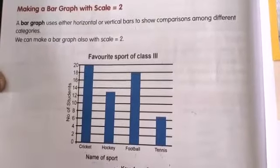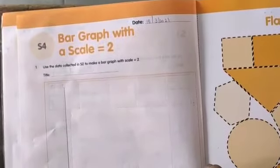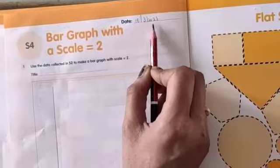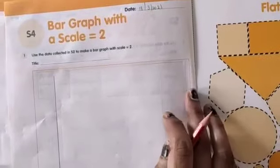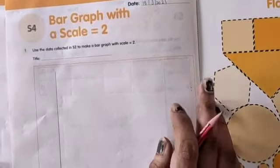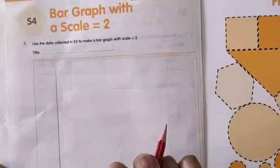Now I am going to explain in the workbook. Children, all of you open your maths workbook, page number 48. Write today's date 18-3-2021, S4 bar graph with a scale 2. So children, this is the last topic of block 25. After this, we are going to do practice questions. So with this S4, we have completed our volume 3 also.